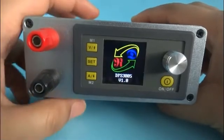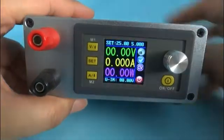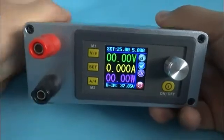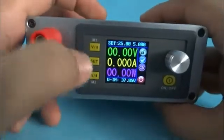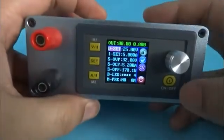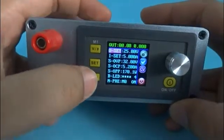Power on. We use DPS 3005. Let's enter into data setting interface. We use the M3.